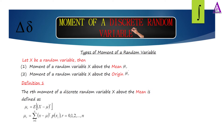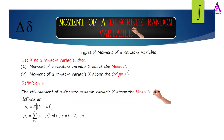Definition one: The r-th moment of a discrete random variable x about the mean is defined as mu subscript r equal to the expected value of (x minus mu) raised to power r, which equals the summation for i ranging from 1 to n of (x minus mu) raised to power r times p(x), where r equals 0, 1, 2, ..., n.